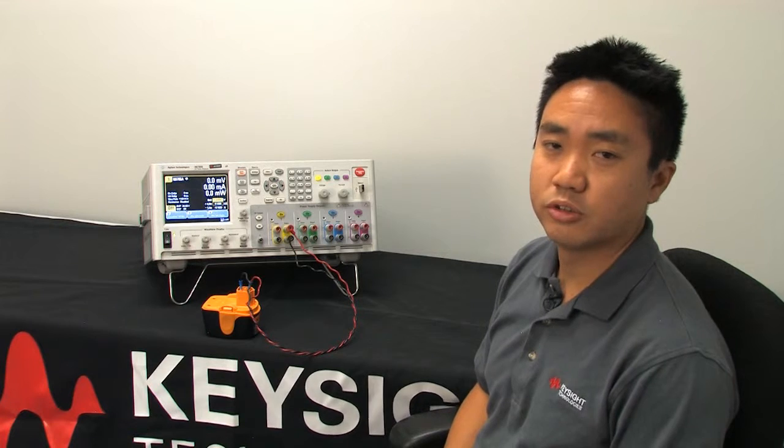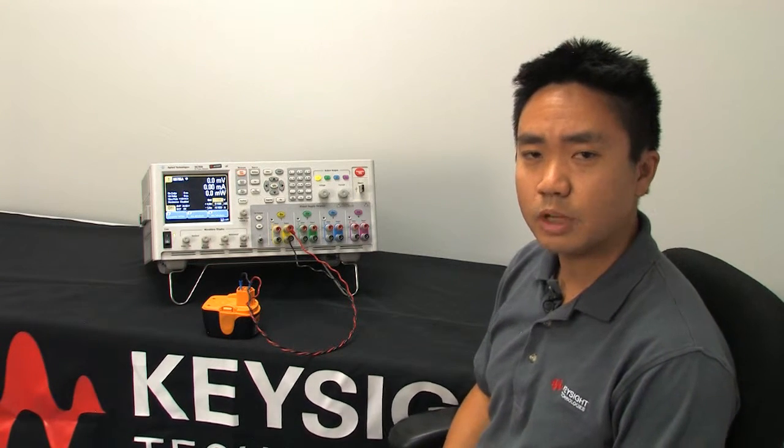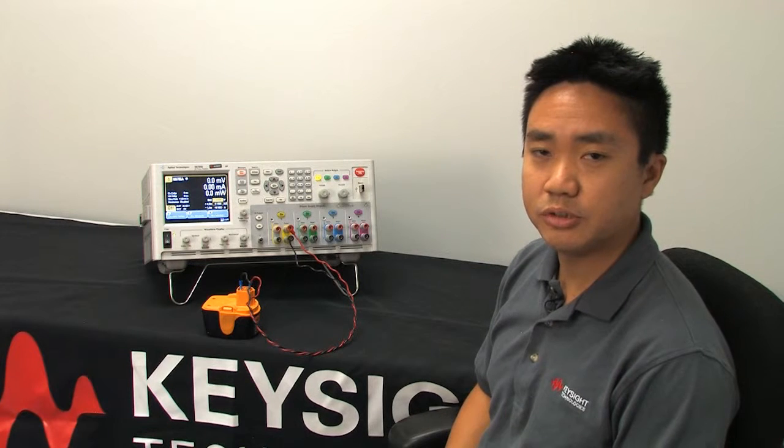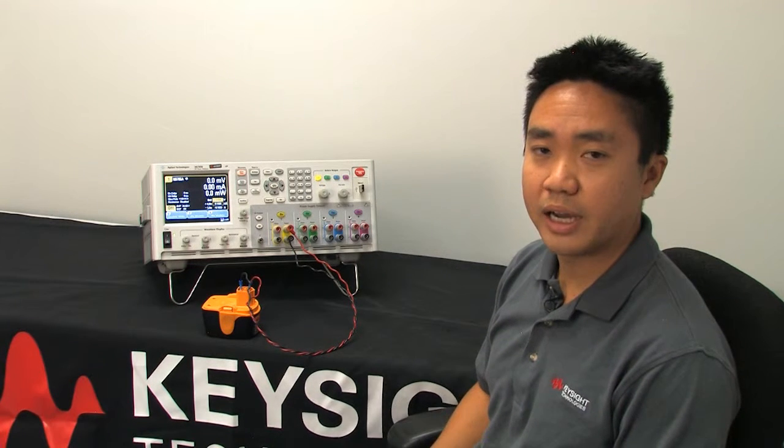One of the key features on our source measure units is the ability to do two quadrant operation. What that means is that our SMUs can act as a power supply and also an electronic load at the same time.